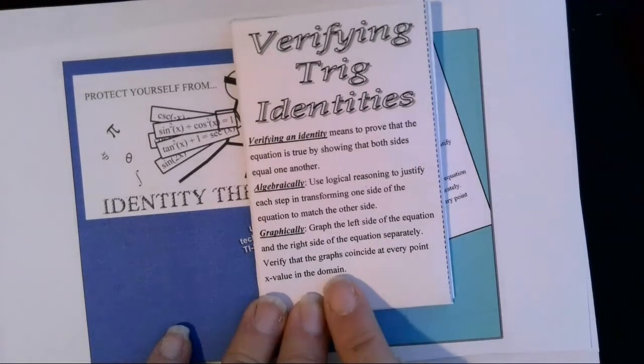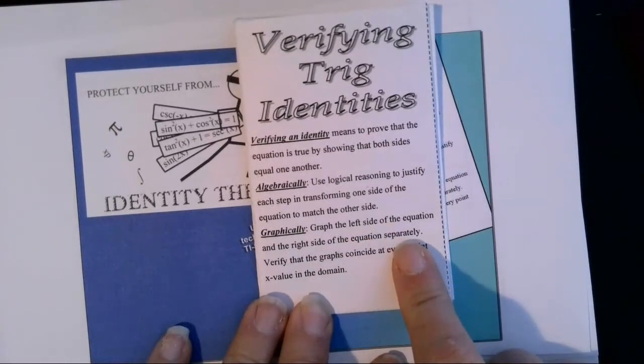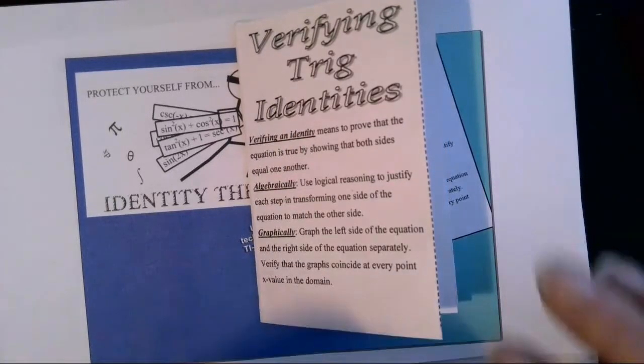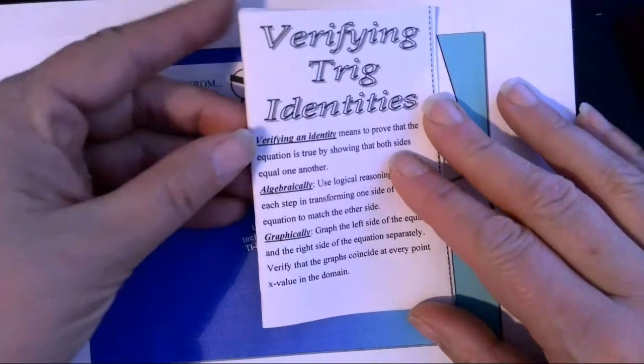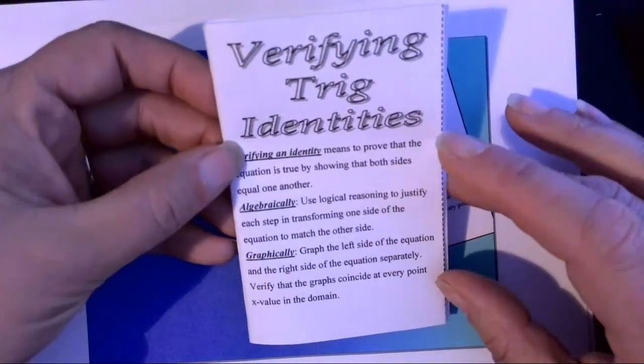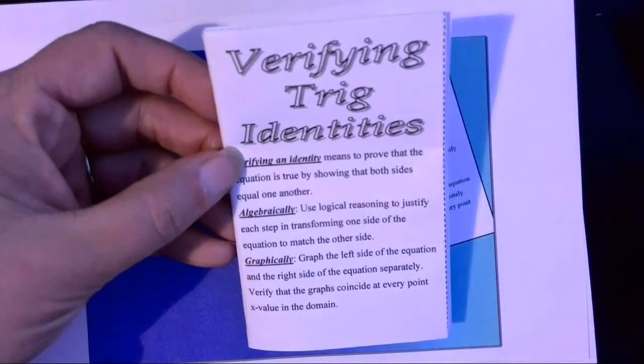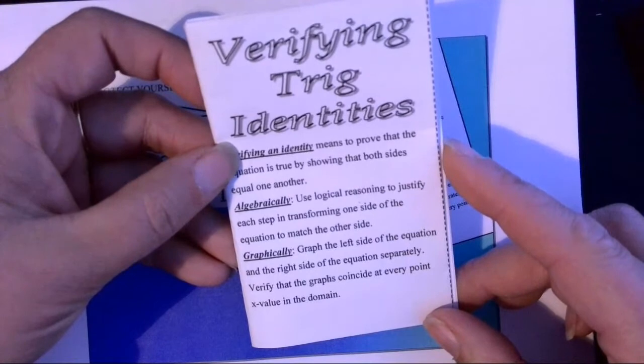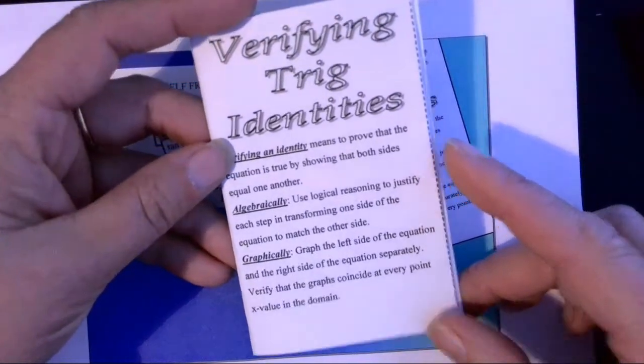Starting off with the graphical approach, we're going to graph the left side of the equation in y1, the right side of the equation in y2, and verify that the graphs coincide at every point that's in the domain. If they do, that means it's an identity. If the graphs don't coincide, then it's not an identity.